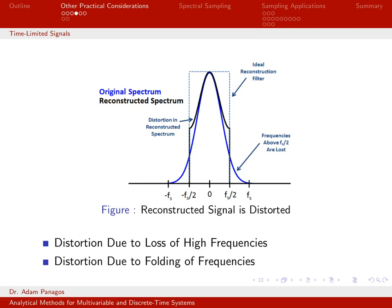There are two types of distortion present. First, we have distortion right here where the black curve doesn't match the blue curve — distortion due to folding of frequencies, or aliasing. Second, my original signal had frequencies above fs/2 that went on forever, but by sampling at fs, I essentially threw those away. Everything above fs/2 is outside my world. So these frequencies, which were present in the original signal, are gone. Two types of distortion when sampling practical signals.